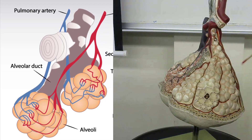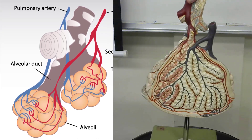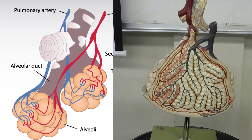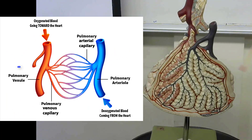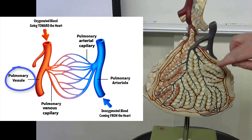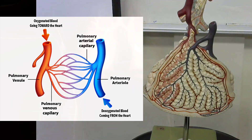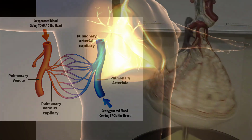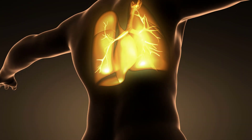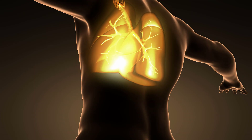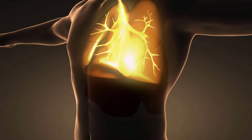Once gas exchange occurs between the alveoli and the red blood cells in the capillaries, that blood is now oxygenated and returns to the heart. The oxygenated blood in the capillaries travels back through venules, which merge together to form veins. The pulmonary veins return that oxygenated blood to the heart so it can deliver oxygen to the cells of the body through the systemic circuit.